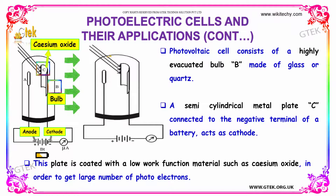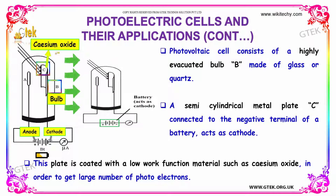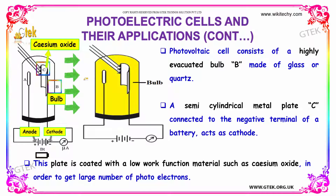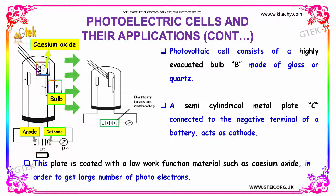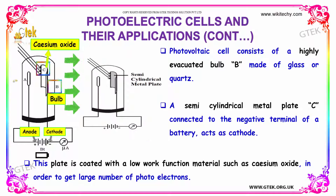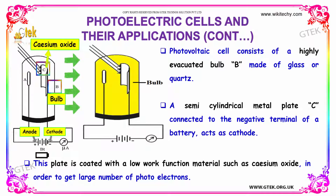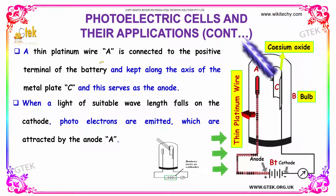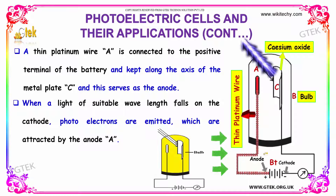Here is the photoemissive cell. It consists of a highly evacuated bulb, B, made up of glass or quartz. A semi-cylindrical metal plate, C, connected to the negative terminal of the battery, acts as the cathode. This plate is coated with a low work function material such as cesium oxide in order to get a large number of photoelectrons. A thin platinum wire, A, is connected to the positive terminal of the battery and kept along the axis of the metal plate, C, and this serves as the anode.